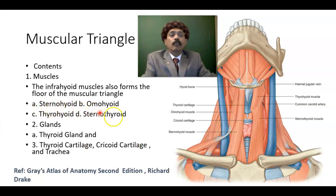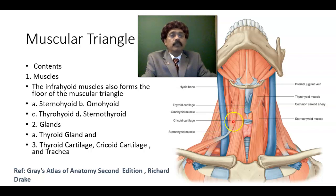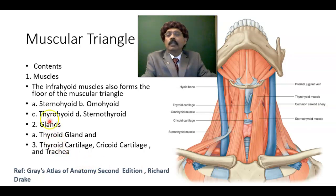The sternohyoid and omohyoid are superficial muscles. The thyrohyoid and sternothyroid are under cover of these two muscles, so they are located deep to them — they are the deep muscles. This muscle has been taken out from this side, so in our content these are the muscles that form the contents.